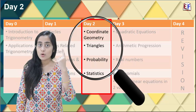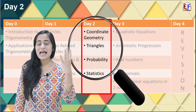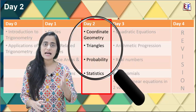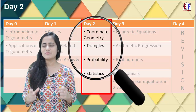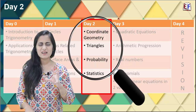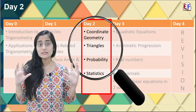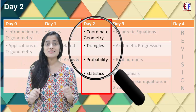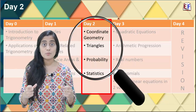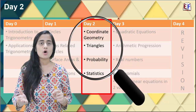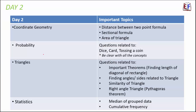On day two we cover coordinate geometry, probability, triangles, and statistics. Coordinate geometry and probability are more important because there are more questions from these two. Triangles is a very lengthy lesson with many exercises and concepts, but from an exam perspective there are not as many questions — still, it is conceptual so do not ignore it. We will share important topics from each lesson. We start day two with coordinate geometry, which is an important lesson.